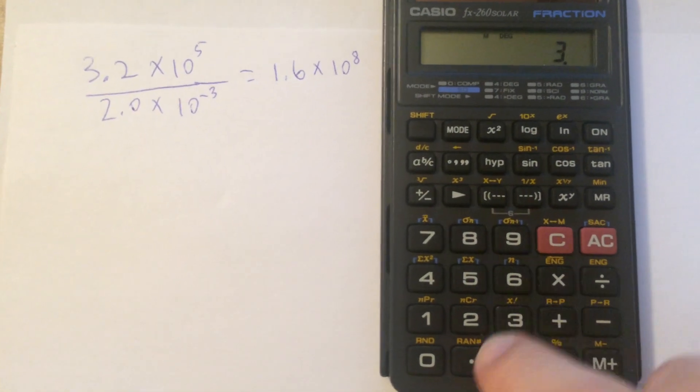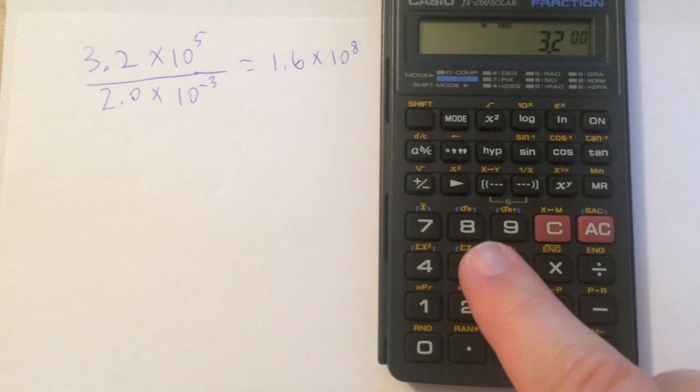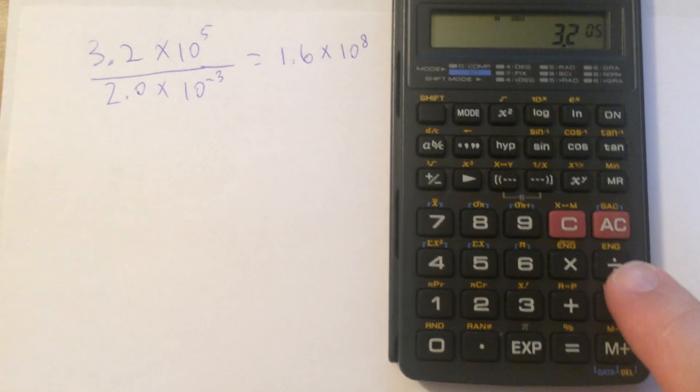Instead, what you enter is 3.2 EXP 5. That gets us the first number.